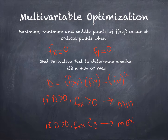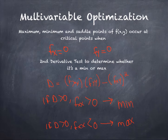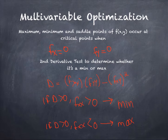Now we need to find whether these critical points are minimums or maximums. In order to do so we need to find the determinant. The determinant equals the partial with respect to x differentiated with respect to x, times the partial with respect to y differentiated with respect to y, minus the cross partial of x and y squared.